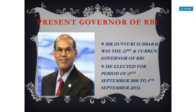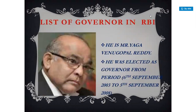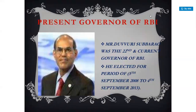These are the governors — previous governors of RBI. The first Indian governor was Chintaman Deshmukhji, who served from August 1943 to June 1949. Then there was Y. V. Reddy, who served as governor from 6 September 2003 to 5 September 2008. Duvvuri Subbarao was the 22nd governor, the previous governor before the current one.